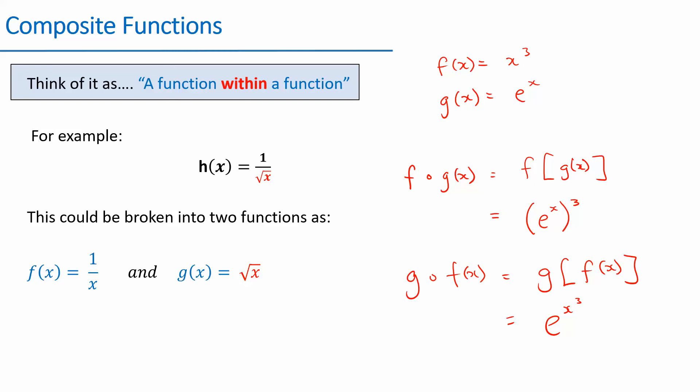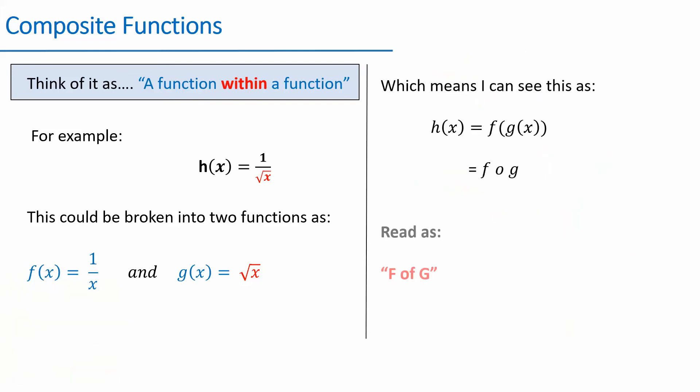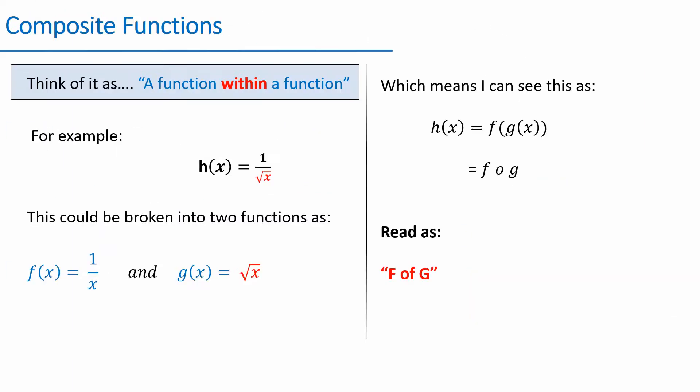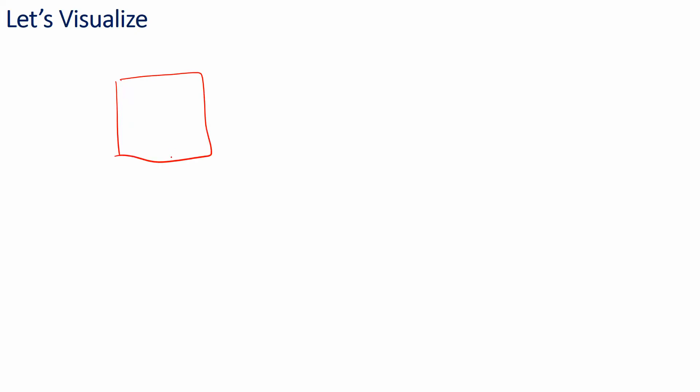So learning how to read f of g and g of f — that's the first step. Second step is some of it will work, some of it will not — that's where it gets tricky. When doesn't it work? I want you to visualize this for yourself. You know how I drew the boxes like machines — when does it work and when doesn't it work? This is the logic of how I understand it.